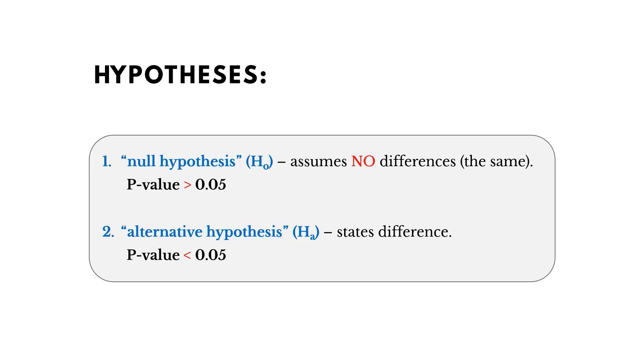Now, as we conduct these tests, we're going to form two different hypotheses. The first is what's called the null hypothesis, and this is where we assume that there's no difference between the sample and the population or no difference between the two samples that we compared. And in those cases, the p-value is going to be greater than 0.05.